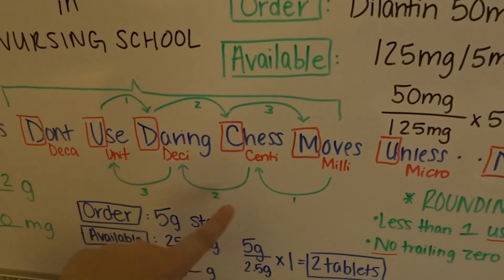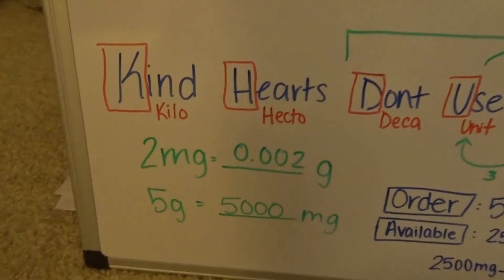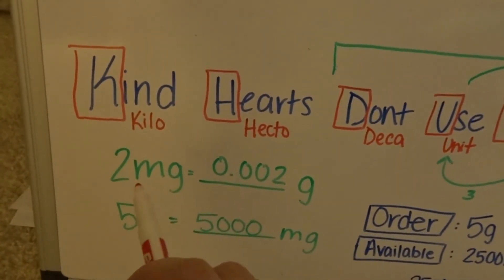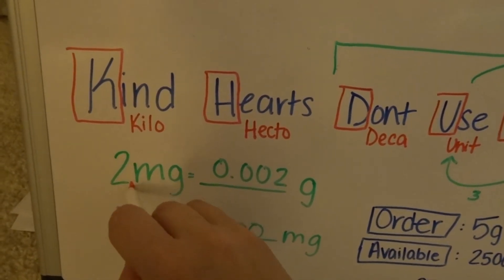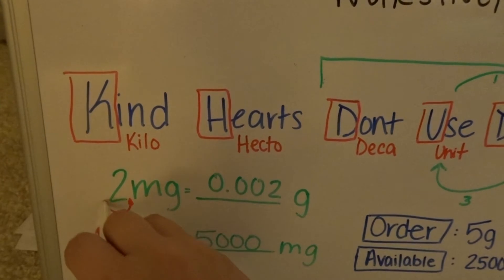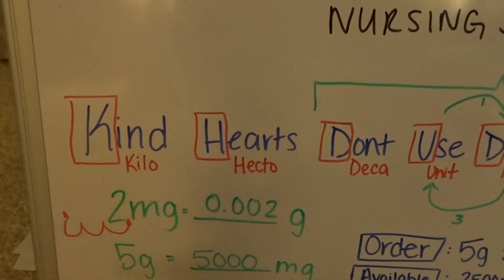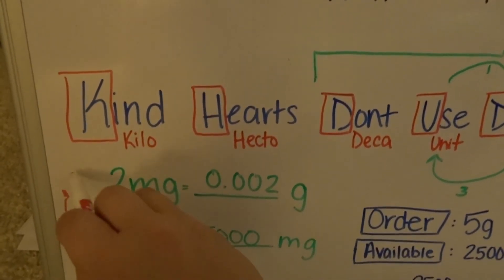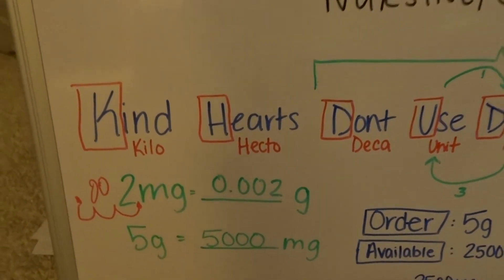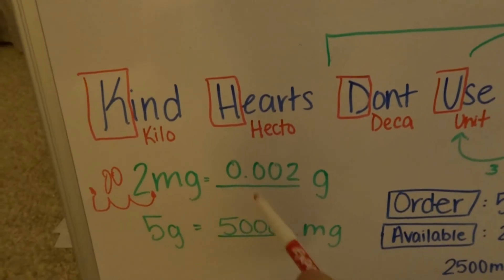So now I'm going to come back to my 2. I'm going to put my decimal — decimals always go behind your number — and I'm going to move it 1, 2, 3, and that's where my decimal goes. Then I fill in the zeros: 0, 0. That's how you get 0.002.